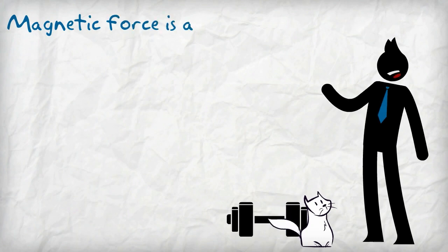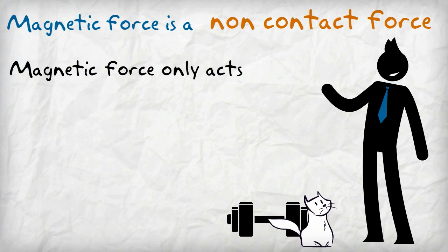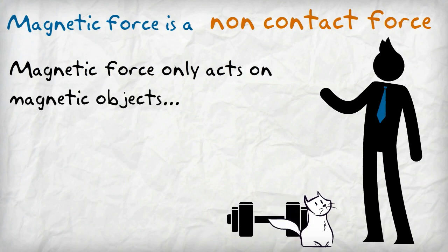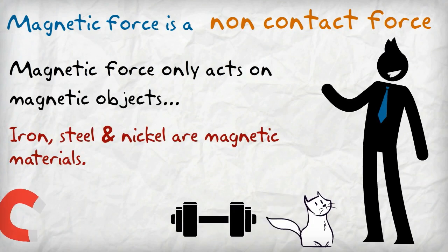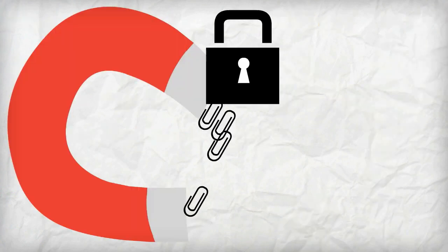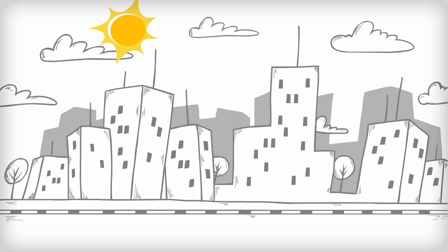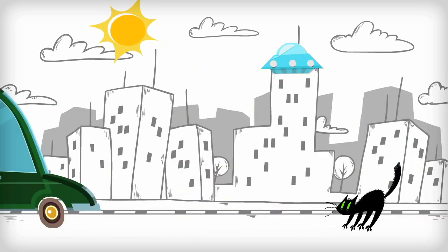Magnetic force is non-contact force. Magnetic force only acts on magnetic objects. Iron, steel, and nickel are magnetic materials. The force of magnetic attraction pulls the magnetic object towards the magnet. The interaction of forces makes the world we live in the way it is.